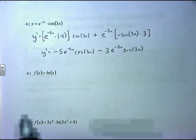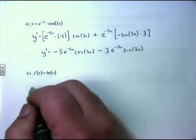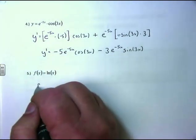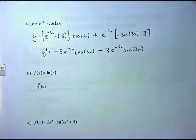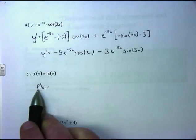Cleaning up: y′ equals negative 5 e to the negative 5x cosine of 3x minus 3 e to the negative 5x sine of 3x. And there's the solution. Now, if f(x) equals the natural log of x, f′(x) equals 1 over x — we have that memorized straight up.